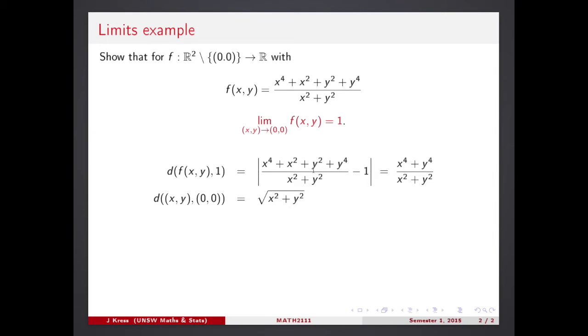Well, some arithmetic done is here within this absolute value. This x squared plus y squared is lifted to the numerator. It cancels these two terms. That's what you end up with. Now, we also compute the distance in the domain between x, y point and a zero point. That's how it is.